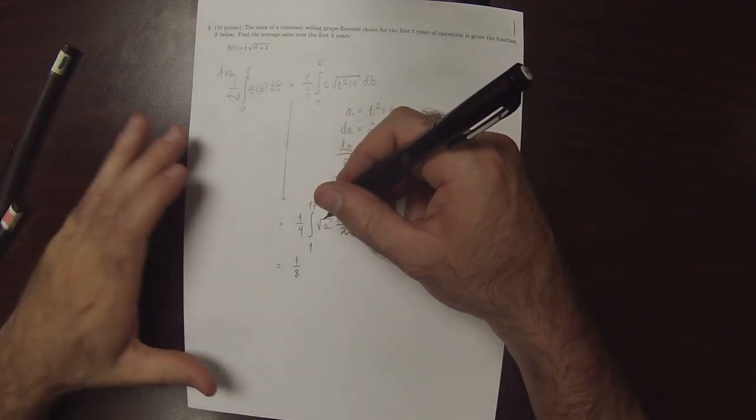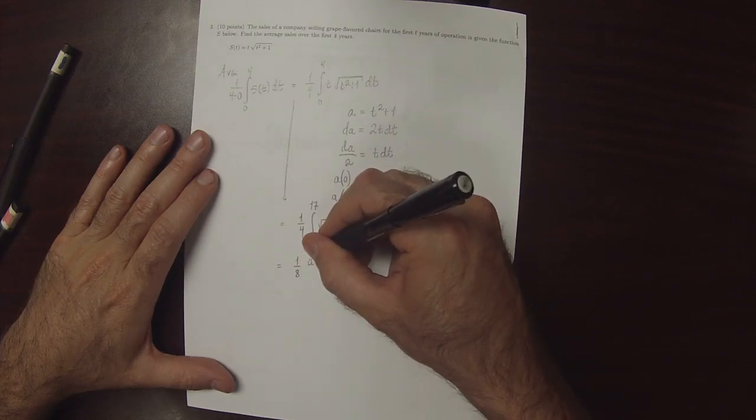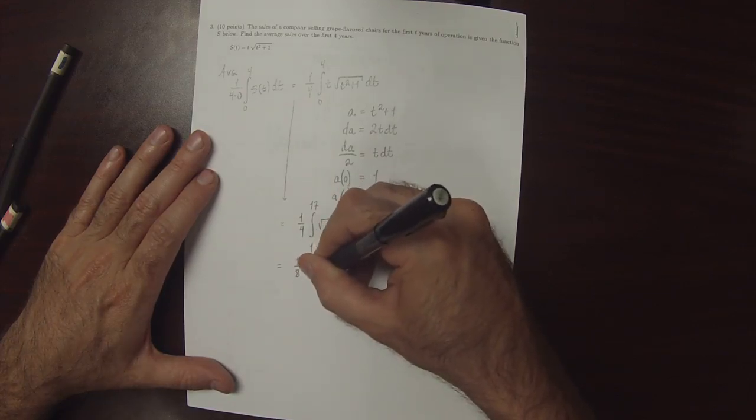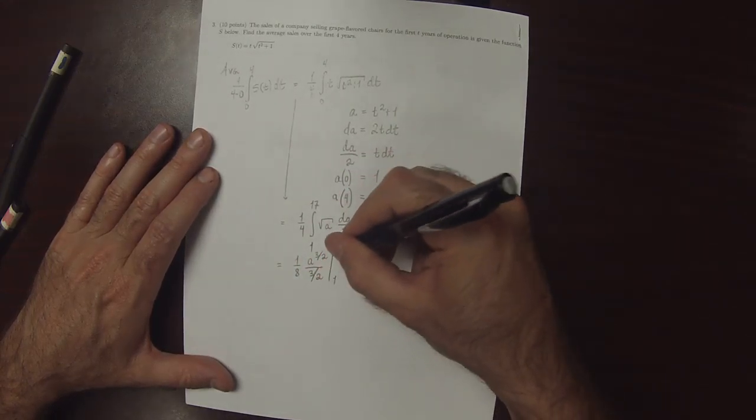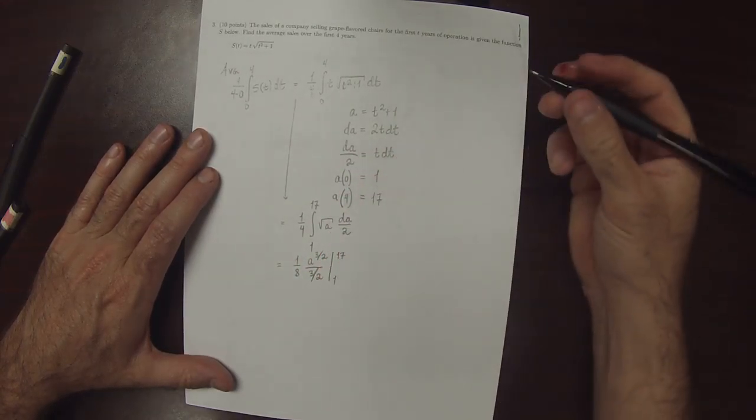Well, square root of A is fractional exponent half. So this would be A to 3 halves, divided by 3 halves, evaluated from 1 to 17.